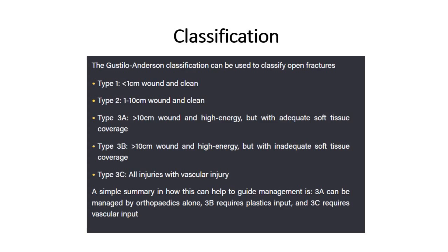Type 3B: more than 10 cm wound and high-energy, but with inadequate soft tissue coverage. Type 3C: all injuries with vascular injury. A simple summary of how this can help to guide management is: 3A can be managed by orthopedics alone, 3B requires plastics input, and 3C requires vascular input.